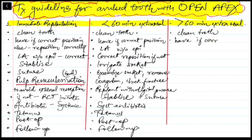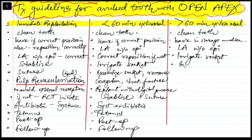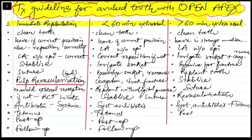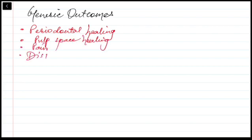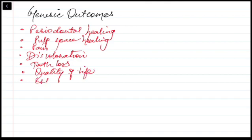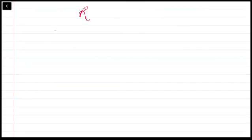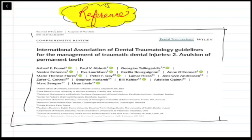For open apex with greater than 60 minutes extra-oral time: clean the tooth, leave it in storage medium while taking history, administer local anesthetic without vasoconstrictor, examine the socket for fractures and remove any coagulum, reimplant with slight digital pressure, verify position clinically and radiographically, stabilize, suture gingival lacerations, perform revascularization, administer antibiotics, check tetanus, and follow up. Generic outcomes to discuss with the patient include: periodontal healing, pulp-based healing, pain, discoloration, tooth loss, quality of life, aesthetics, number of dental visits, trauma and anxiety. Injury-specific outcomes include infraocclusion and ankylosis.